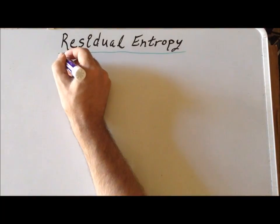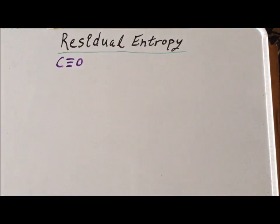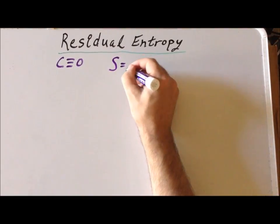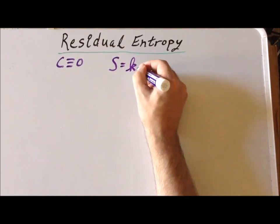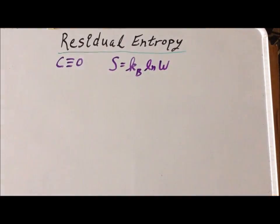So recall that carbon monoxide has the following structure. And also recall that according to Boltzmann, the entropy is equal to the Boltzmann constant times the natural log of W, where W is the number of different ways that we can arrange the system.